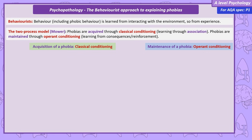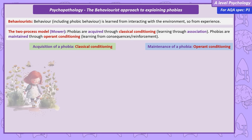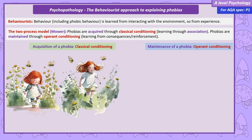Let's think about the two-process model with a scenario. Laura has a phobia of bees. When she was young she used to play with bees and was not afraid of them. However, one day she accidentally put her hand over one and was stung. This produced a fear response, and she panicked and started hitting the bees, causing her to be stung a few more times. She now associates the pain of being stung with bees, so whenever she sees a bee she has a fear response — even though she hasn't been stung since. This is an example of phobia acquisition through classical conditioning.